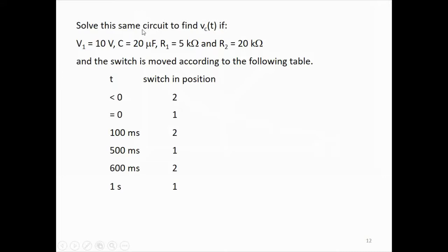For the same circuit, find VC with numerical values: V1 = 10 V, C = 20 µF, R1 = 5 kΩ, R2 = 20 kΩ. The switch moves according to this table: T < 0 — position 2; T = 0 — moved to position 1; T = 100 ms — moved to position 2; T = 500 ms — moved to position 1; T = 600 ms — moved to position 2; T = 1 s — moved to position 1. Find an expression for VC for each interval. If you can do this, you will have mastered sequential switching. This is the end of chapter 8; we will start chapter 9 next time.